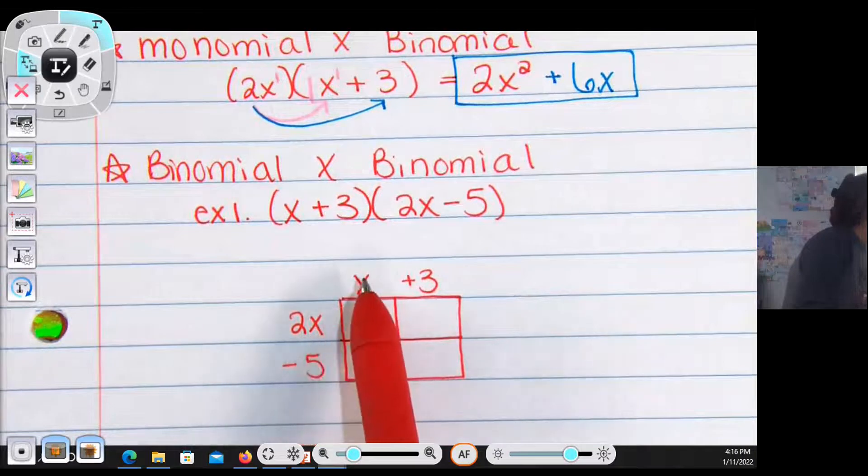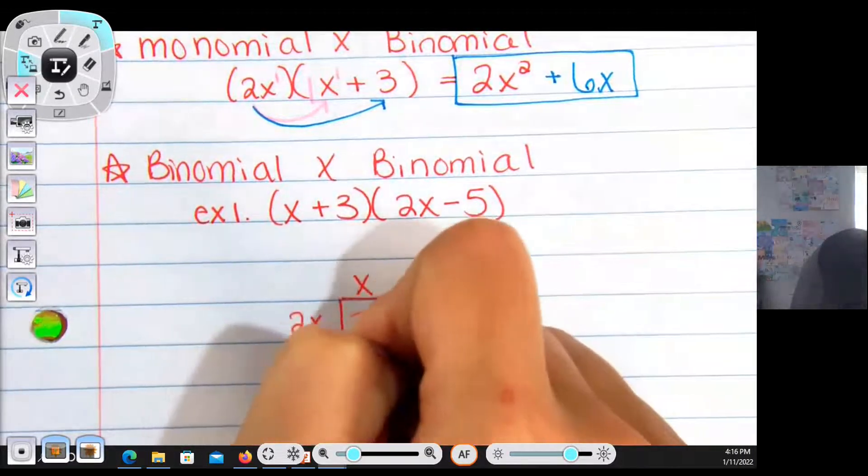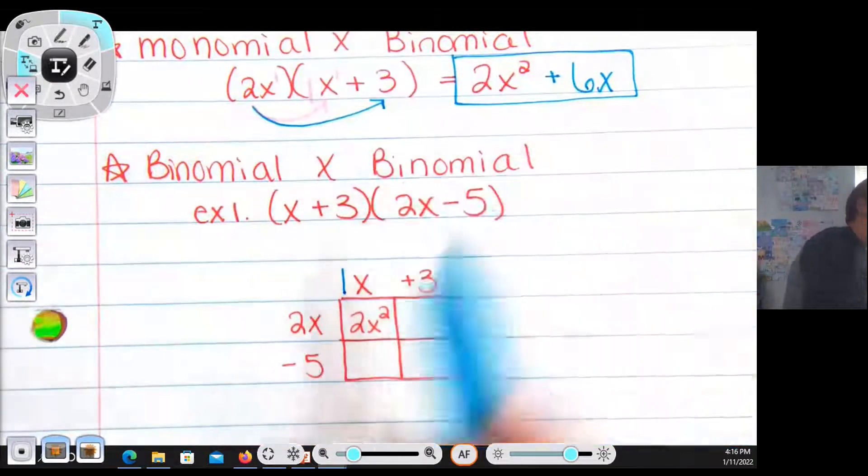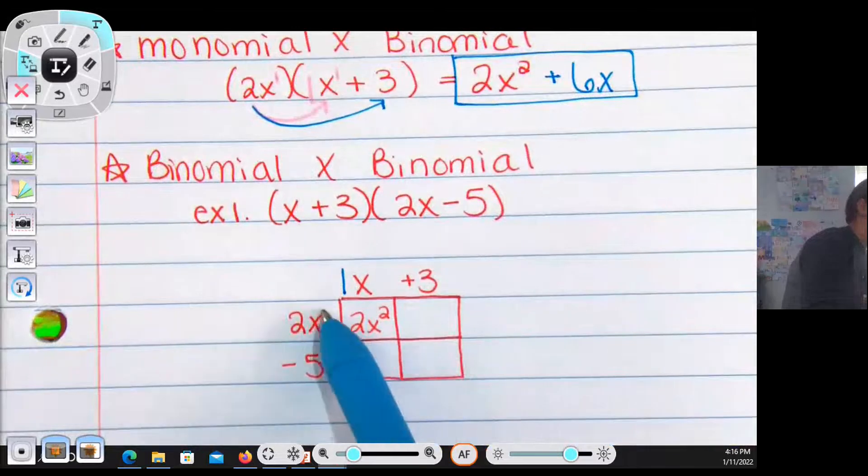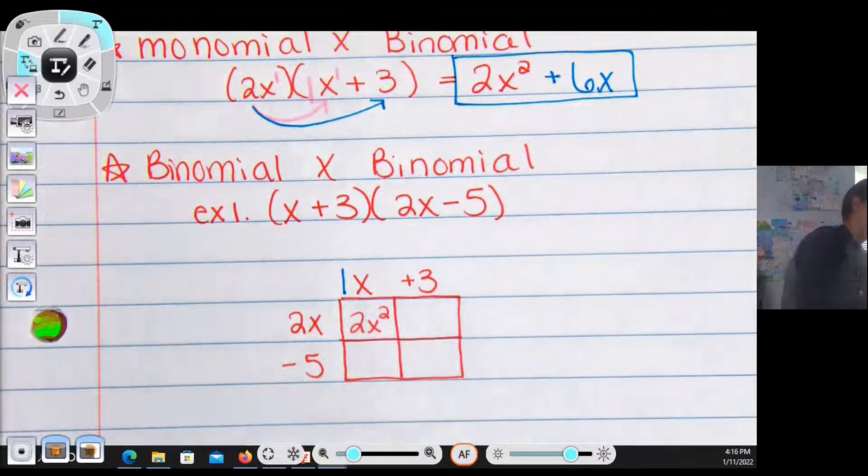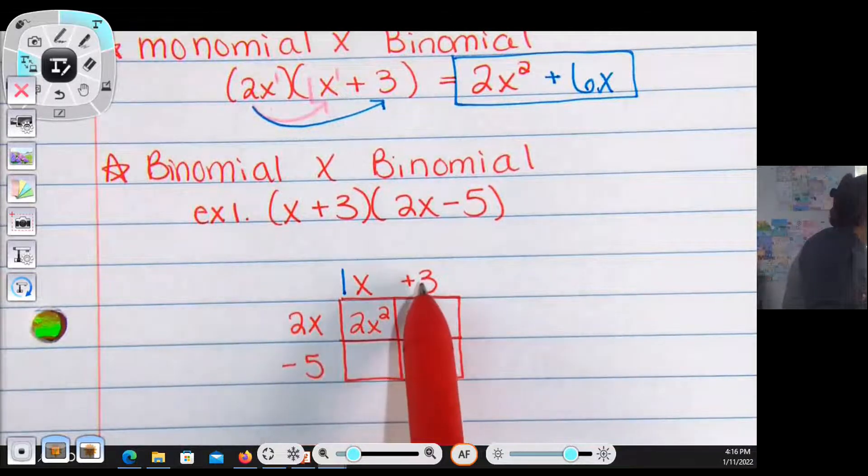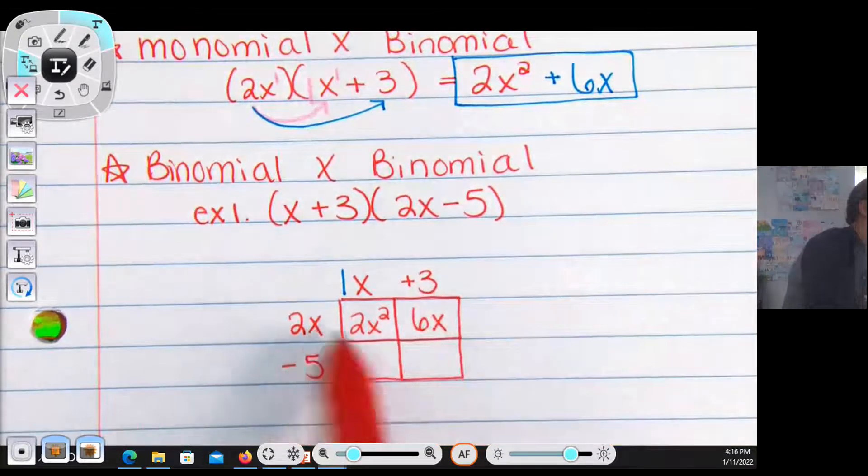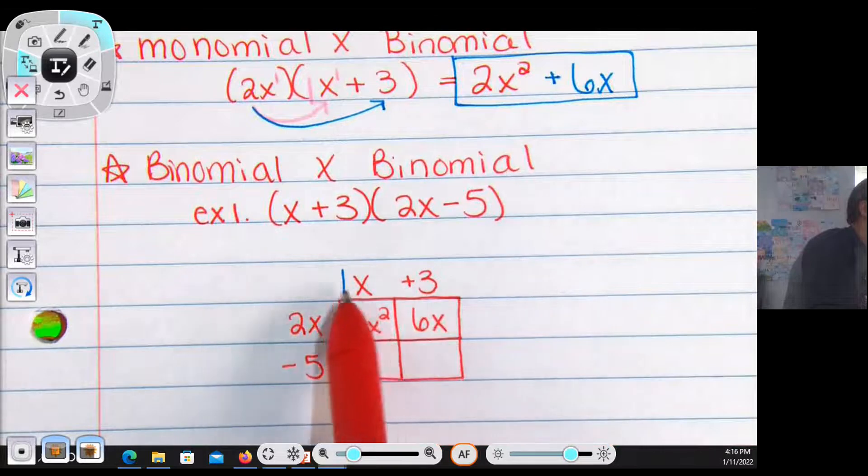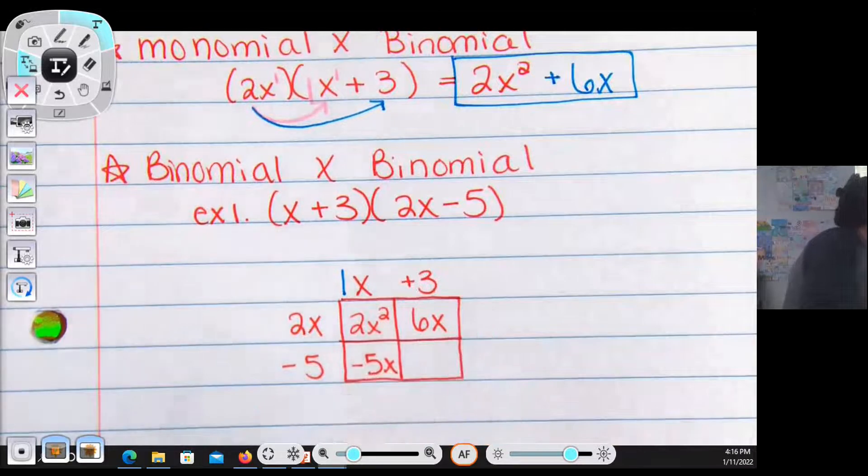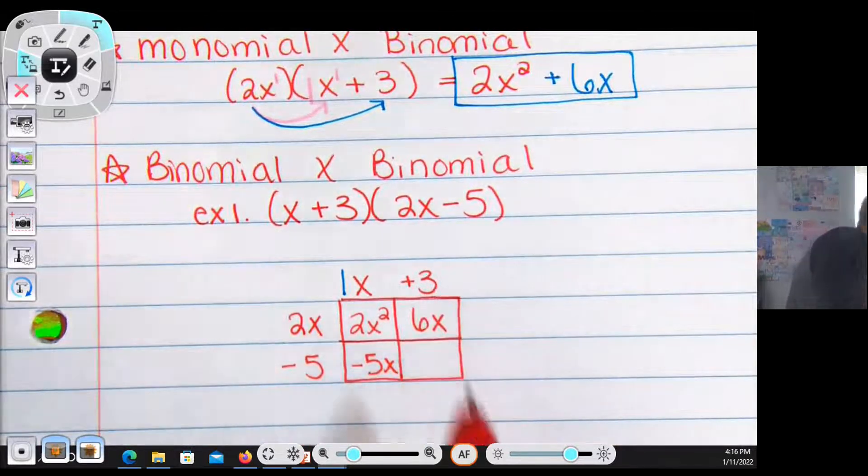I'm going to multiply these to figure out what the inside of the box is going to make. 2x multiplied by x is going to give me 2x². Because it's really like 2 times 1, 2 times 1 is 2, I have a total of 2x, so 1 exponent, 1 exponent is 2. 2x multiplied by 3 gives me 6x. Not 6x² because there's only 1x. 1x multiplied by negative 5 gives me negative 5x. Negative 5 multiplied by 3 makes negative 15.